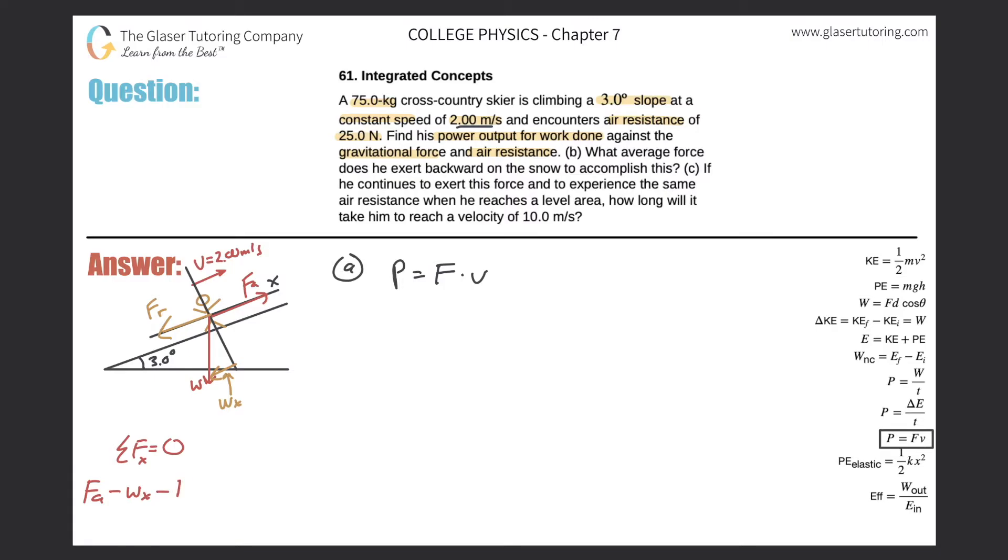So it should be the applied force, which is positive, minus then the weight in the x direction, minus then the force due to wind resistance. And that's all equal to zero. And therefore, my applied force here will equal the force of wind resistance plus then the weight in the x direction.